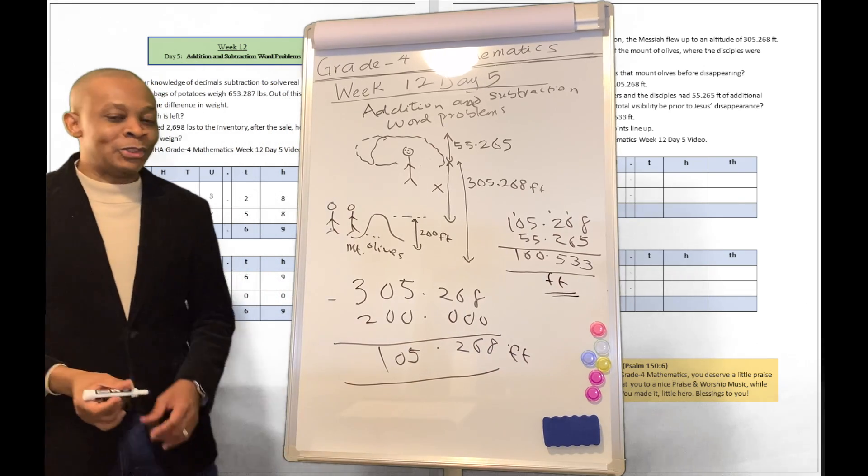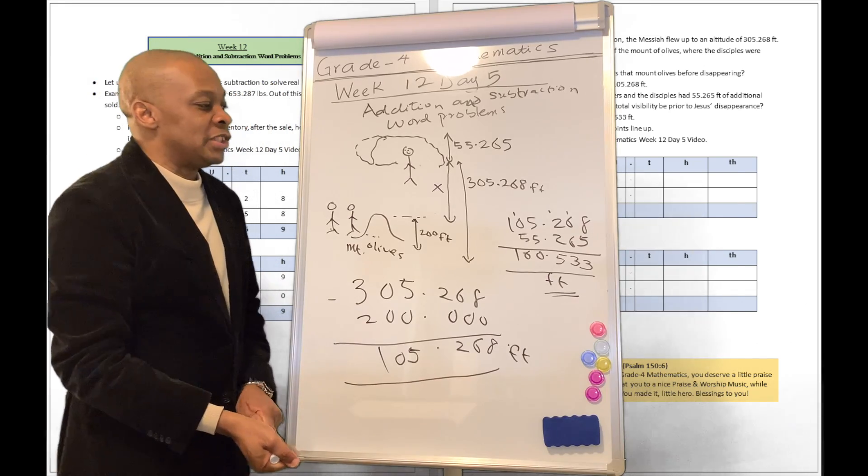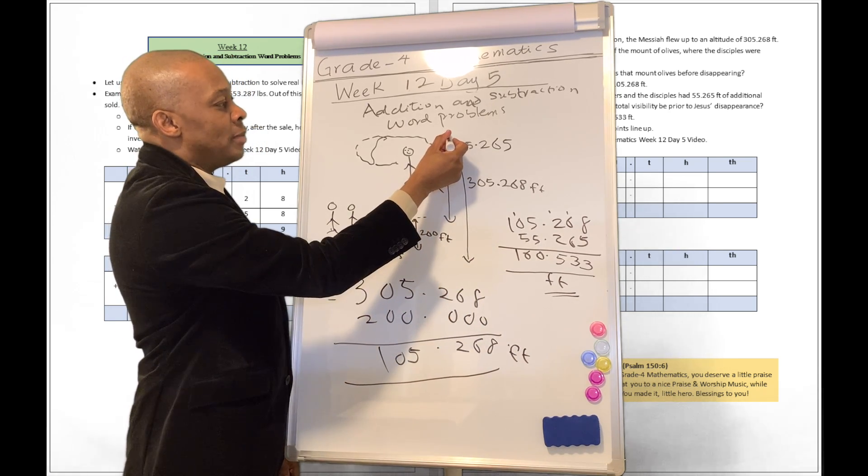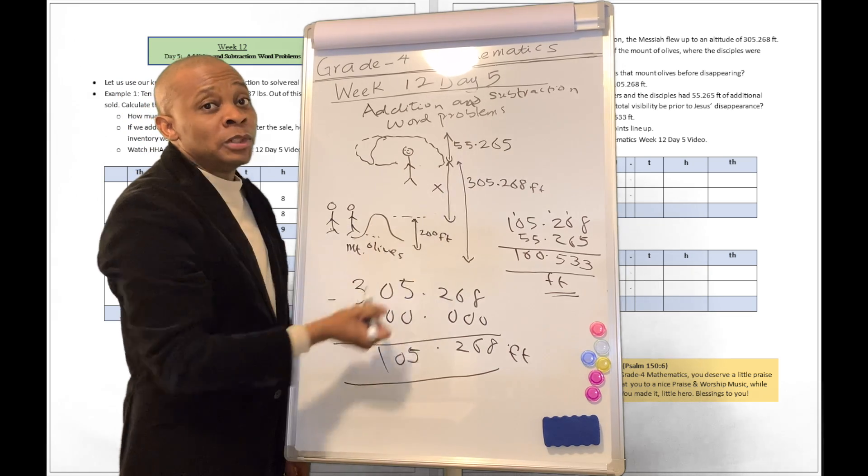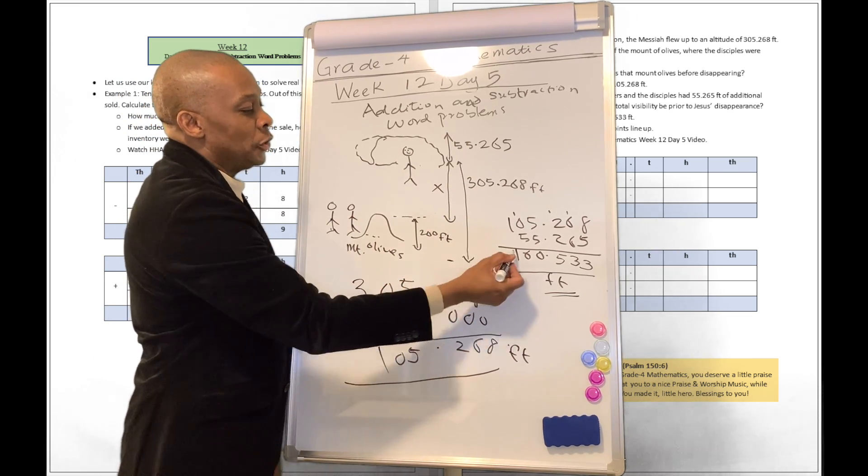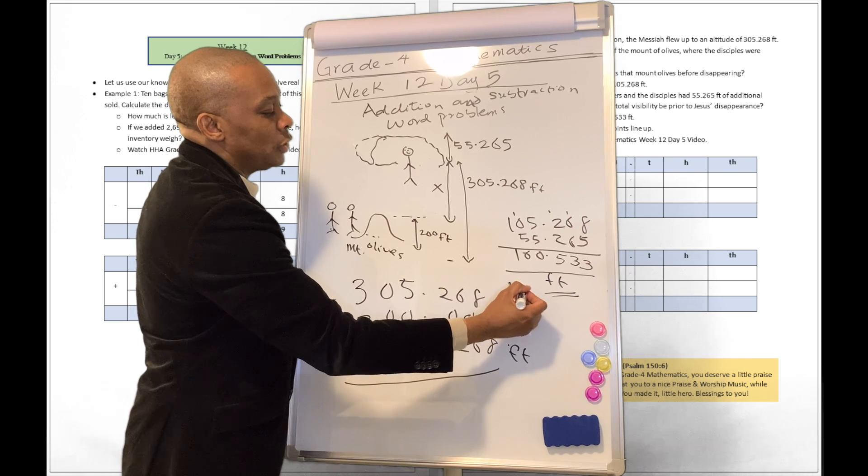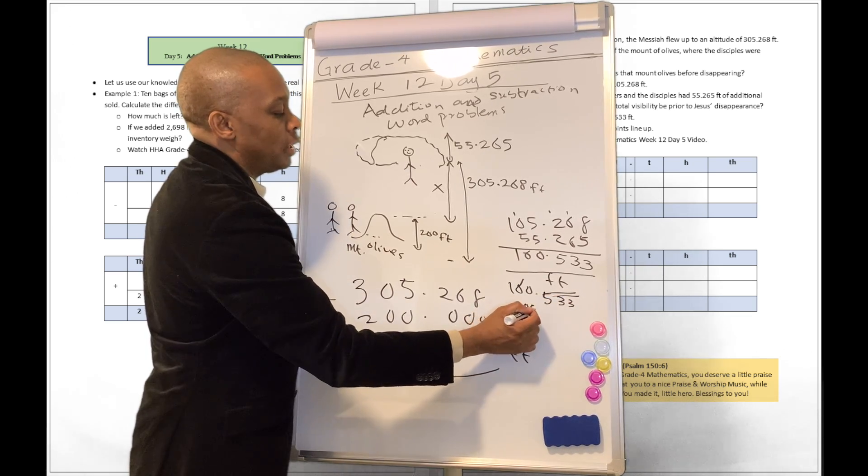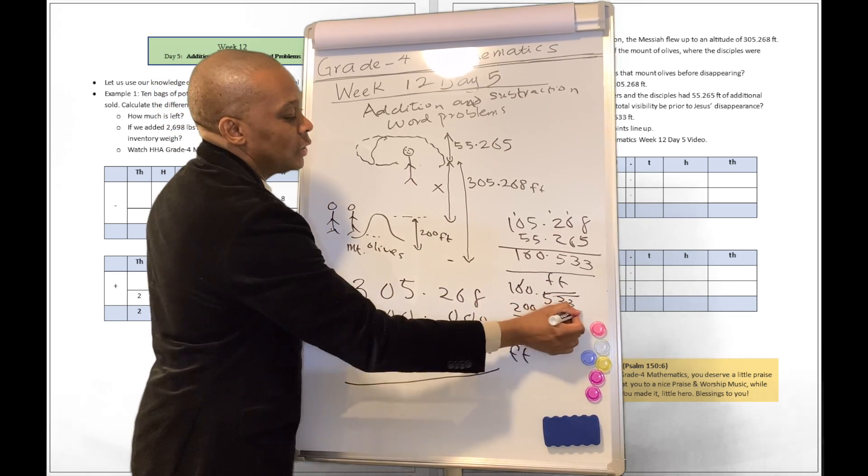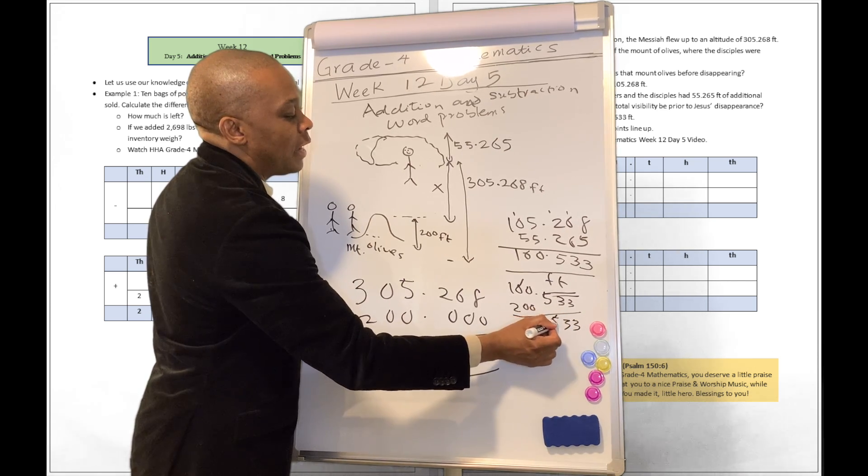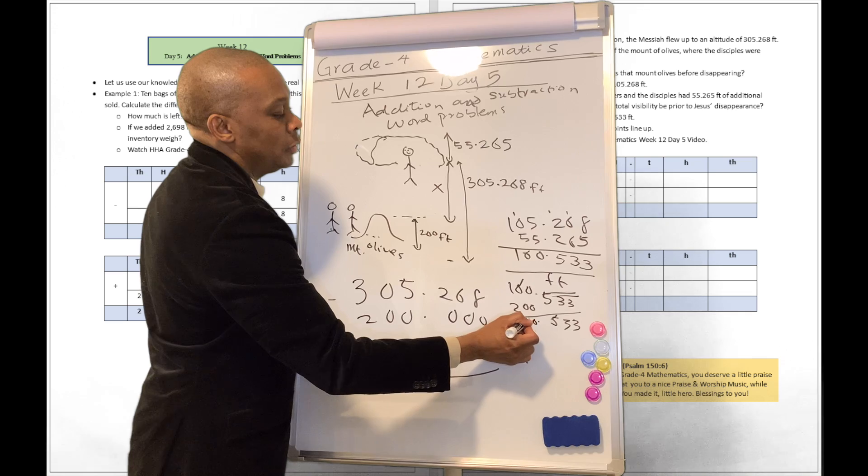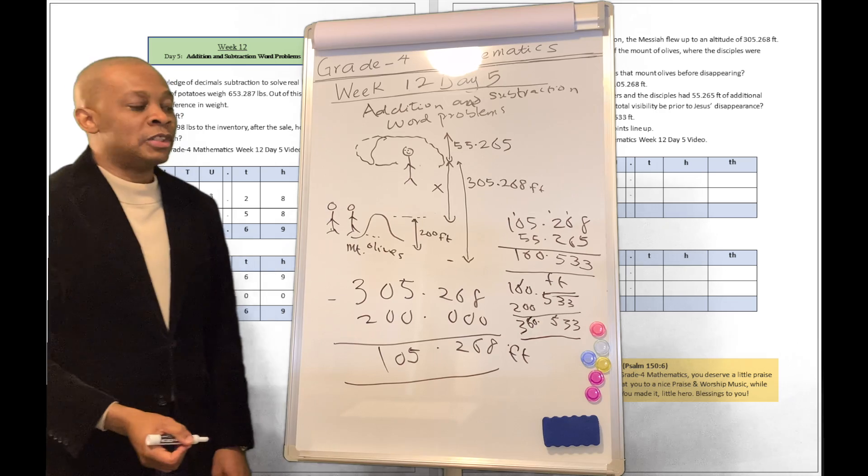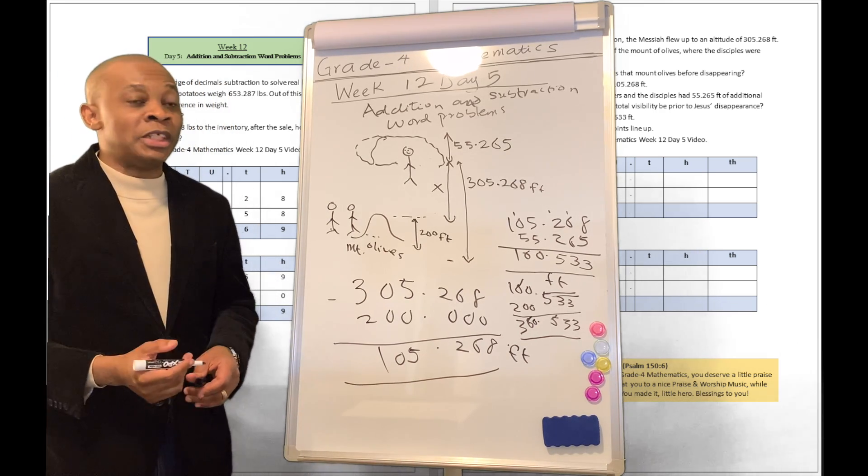Okay, so that's going to be the answer to that. So the total visibility will be, so they're talking about total visibility right here from the top of the place where Jesus is going to disappear to the bottom of the mountain. You're going to have 160.533 plus 200. You're going to add this distance to it as well. So that's going to be 335.063. So the answer is going to be 360.533.